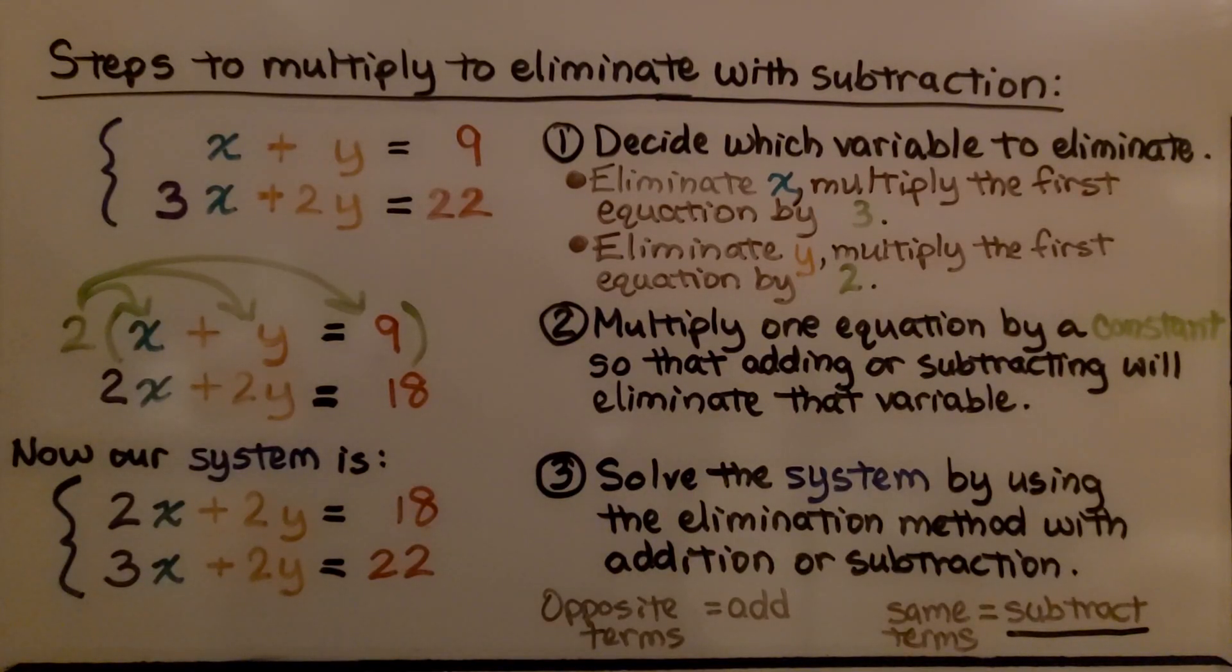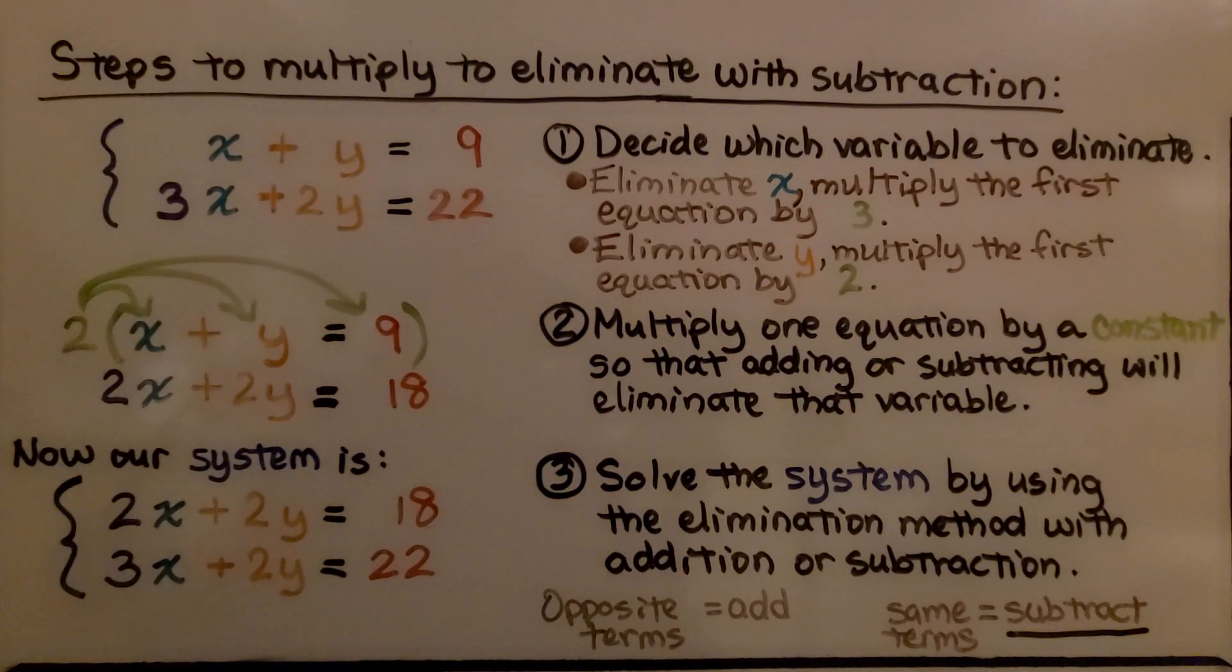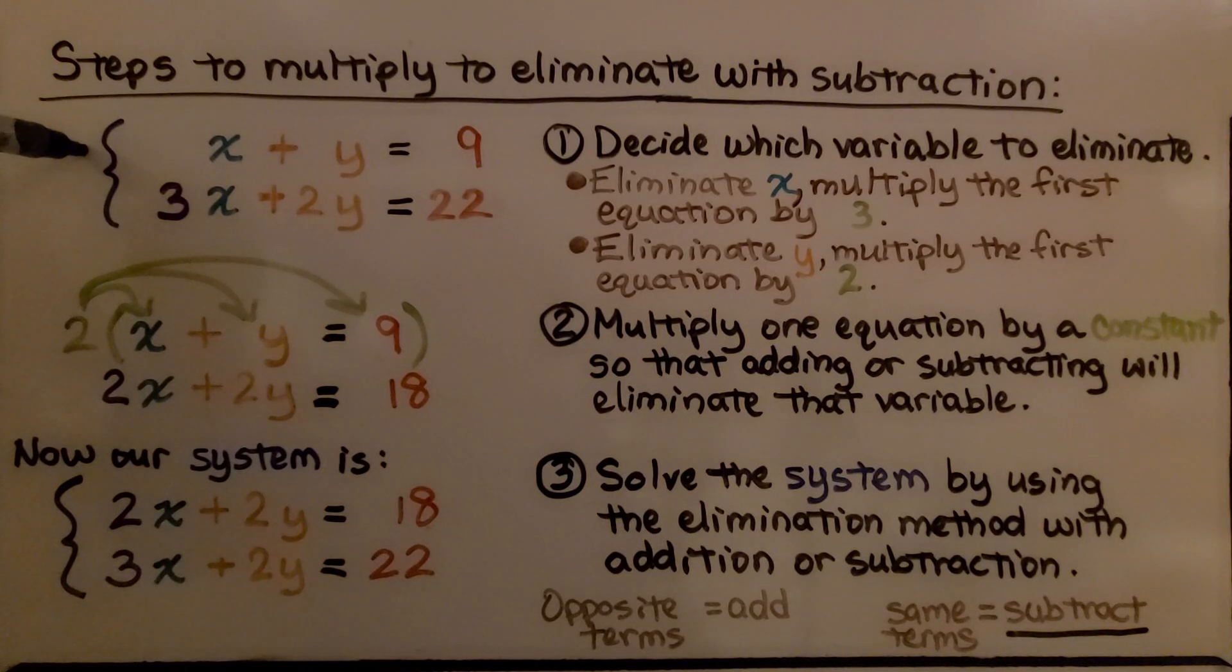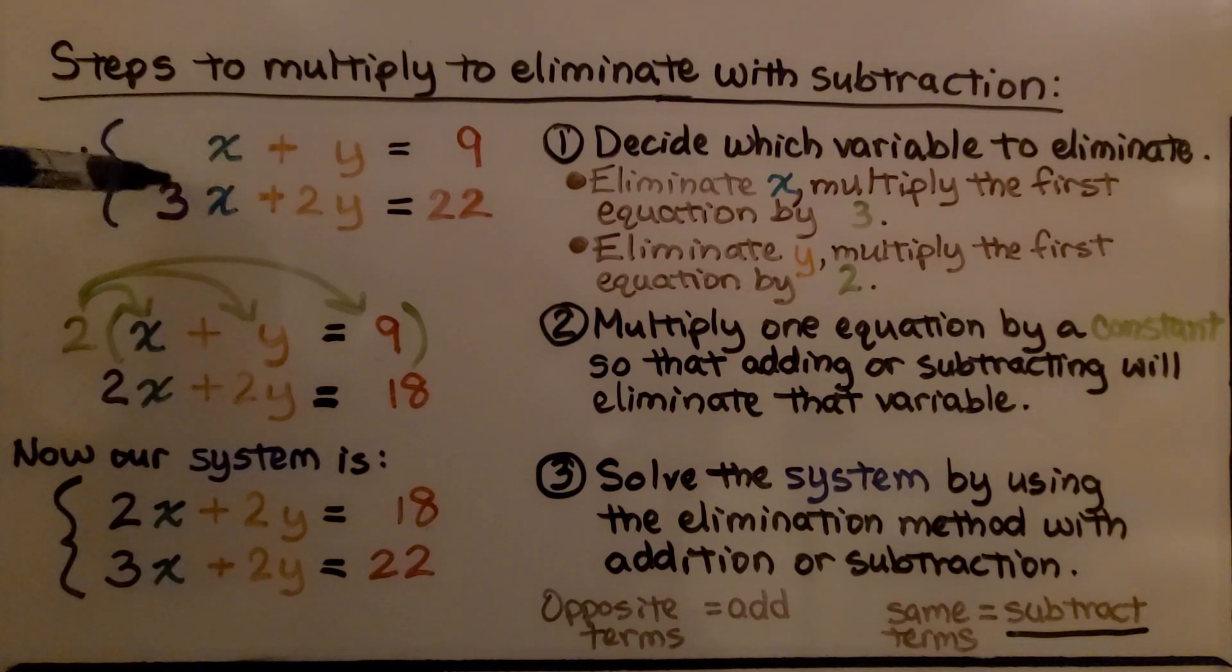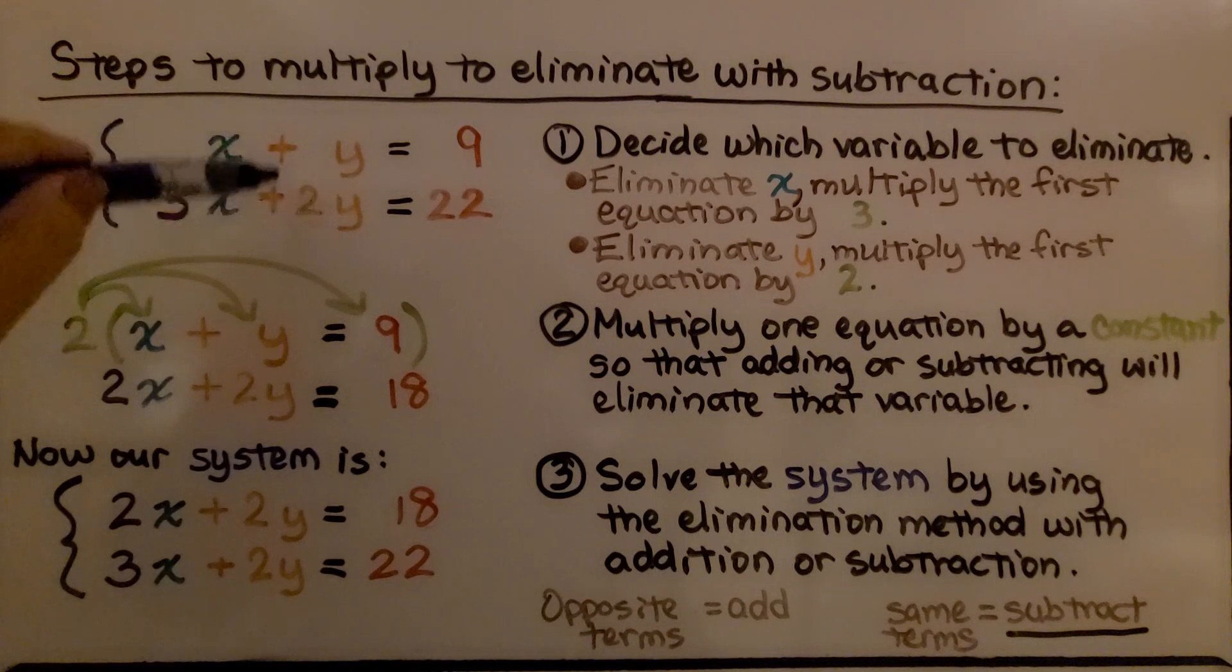Here are the steps to multiply to eliminate with subtraction. We have our system of equations and we decide which variable to eliminate. If we want to eliminate x, we can multiply the first equation by 3. If we want to eliminate y, we multiply the first equation by 2. If we multiply it by 3, we'll have a 3x over a 3x and we can eliminate this because they'll be the same. We could use subtraction. And if we multiply it by 2, we'll have a 2y here and they'll be the same and we can eliminate them with subtraction.